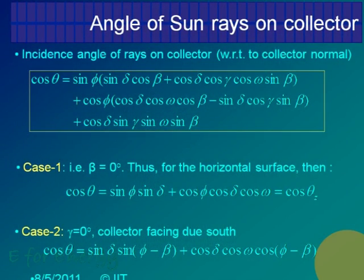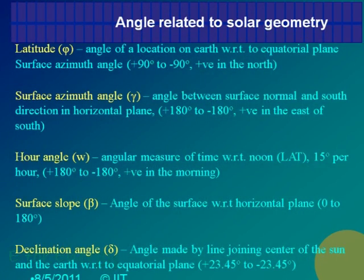Omega is also needed — the hour angle with respect to noon time. The latitude can vary plus or minus 90. The azimuth angle with respect to south can vary 180 degrees. The hour angle — as the name suggests, it measures time in terms of angle. How many hours in a day? 24 hours. The earth revolves 360 degrees in one day, so 360 degrees divided by 24 gives 15 degrees per hour.